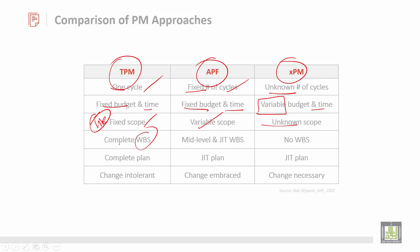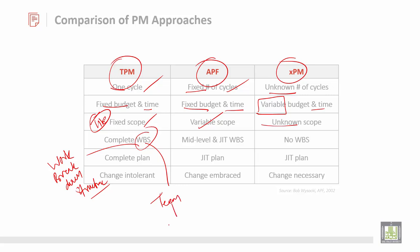Then there is WBS — Work Breakdown Structure. WBS is a key project tool that organizes a team's work into manageable sections to manage a particular problem effectively.